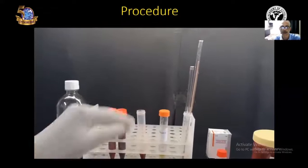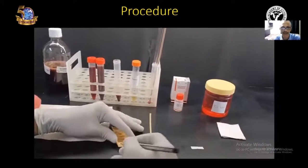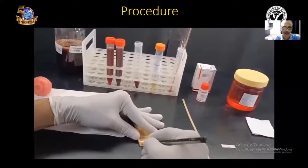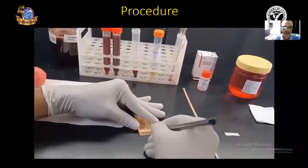Now, we have to transfer this clot into the cassette. For that, first take the tissue cassette and label the cassette with the specimen number. We can use a lead pencil for this purpose. You can see the cassette is being labeled.